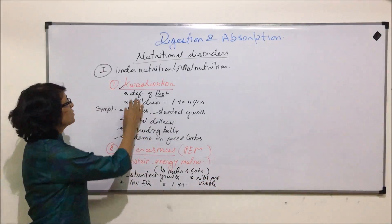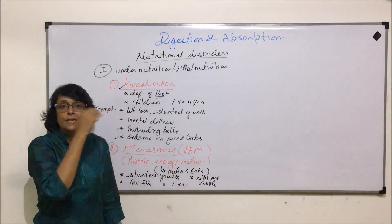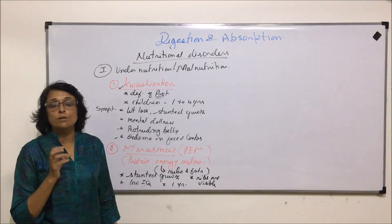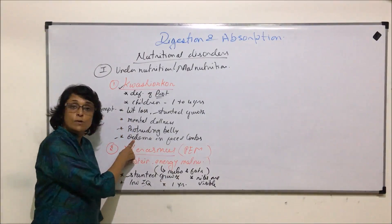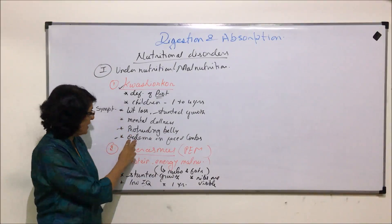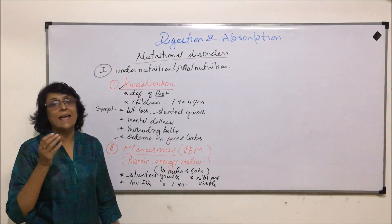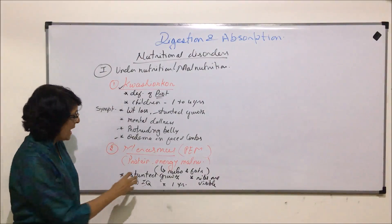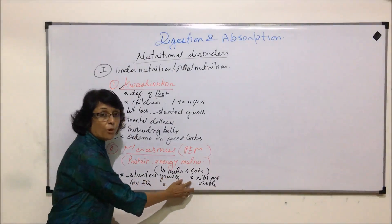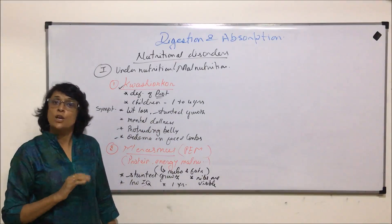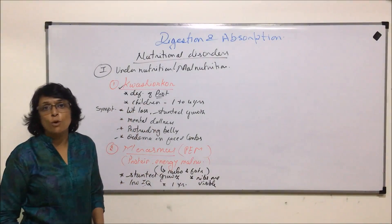In both kwashiorkor and marasmus there is protein deficiency, but the major difference is that in kwashiorkor it is only protein deficiency. Proteins like albumins hold water in the blood; when deficient, liquid oozes into tissues and accumulates, resulting in swelling known as edema — hence the characteristic protruding belly. In marasmus, all three — proteins, carbohydrates, and fats — are missing, so children become extremely thin, ribs are visible, and there is reduced mental development.